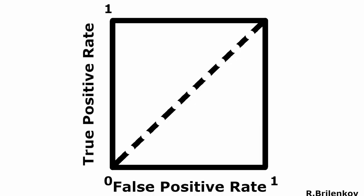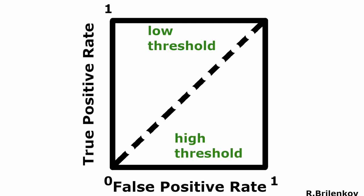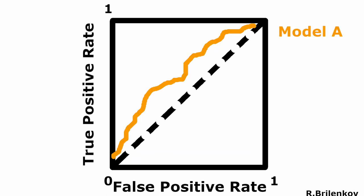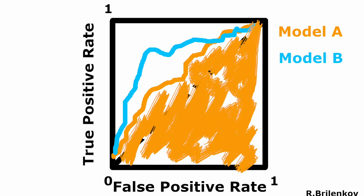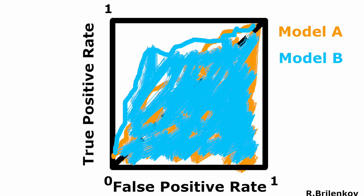As seen in this animation, the different values of the decision threshold produce different values of true positive and false positive rates. Higher values of threshold C produce lower values of these rates, and vice versa. The actual ROC curve is drawn by connecting different points on that graph.